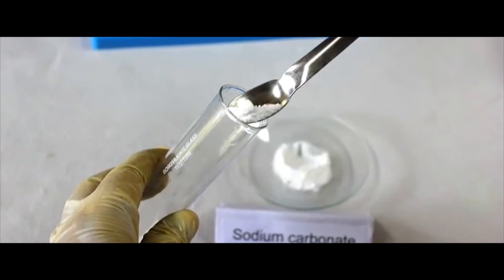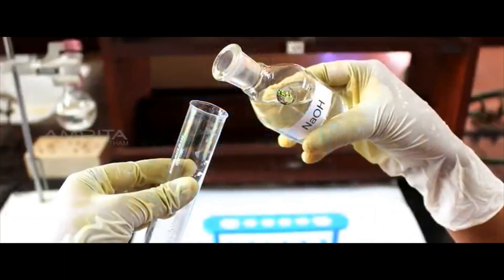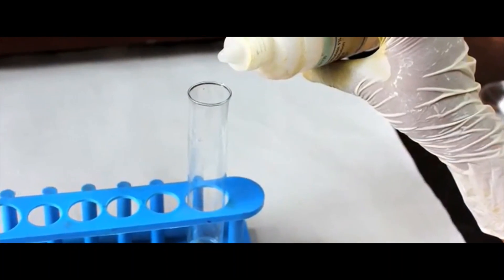Now add a small amount of sodium carbonate in a boiling tube and add NaOH solution into it. Then shake the boiling tube well. Add a few drops of phenolphthalein into it.